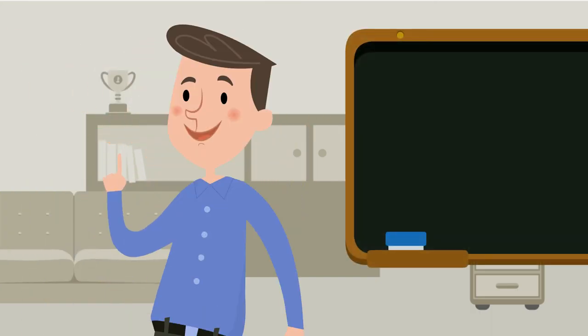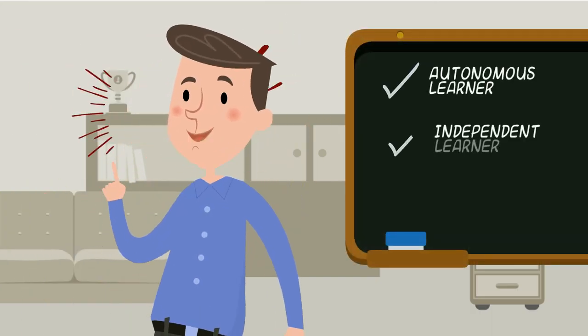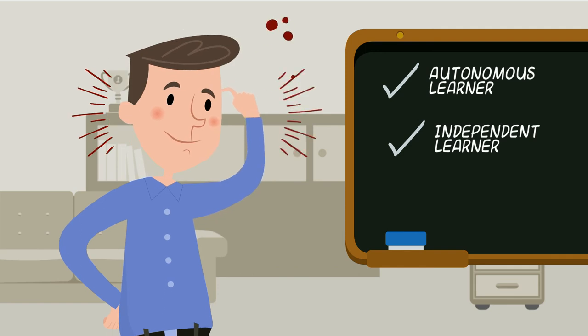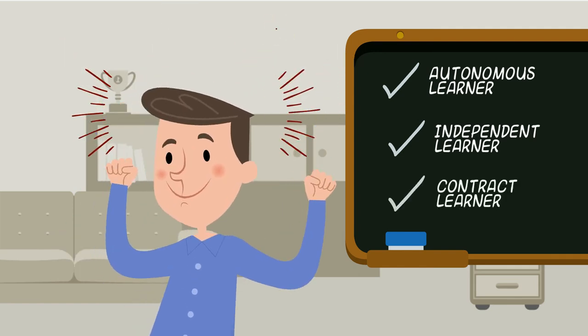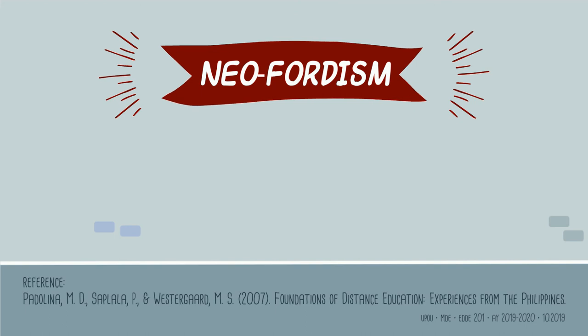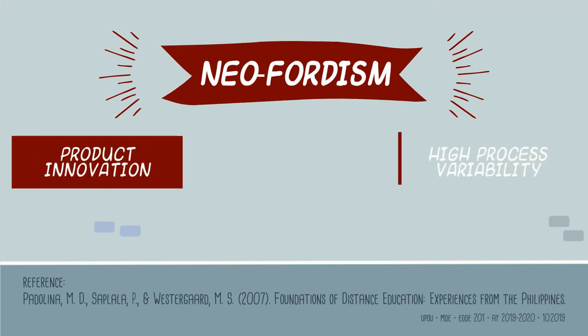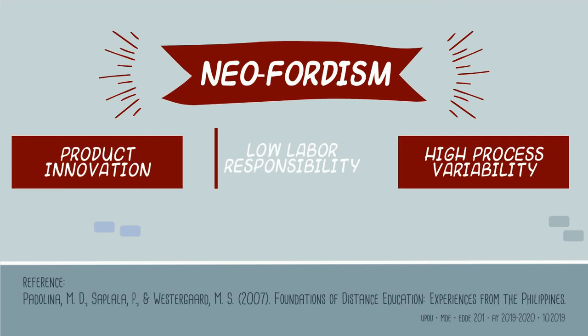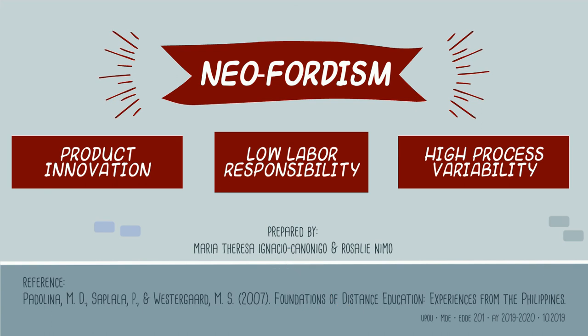Students' roles are through developing themselves to become autonomous learner, independent learner, and contract learner. Neo-Fordism has high product innovation and high process variability, but maintains low labor responsibility.